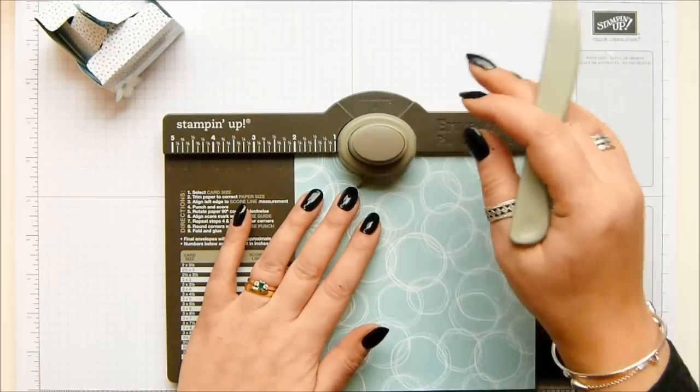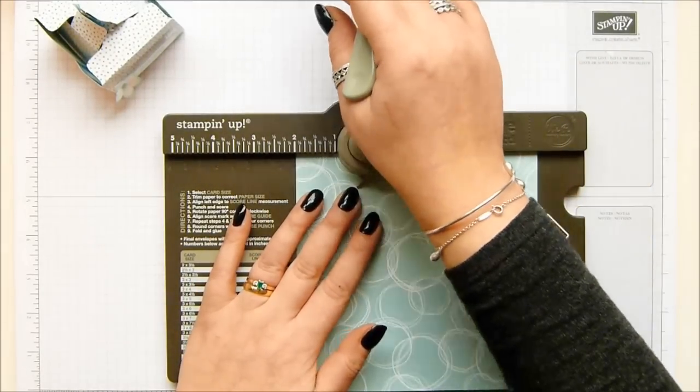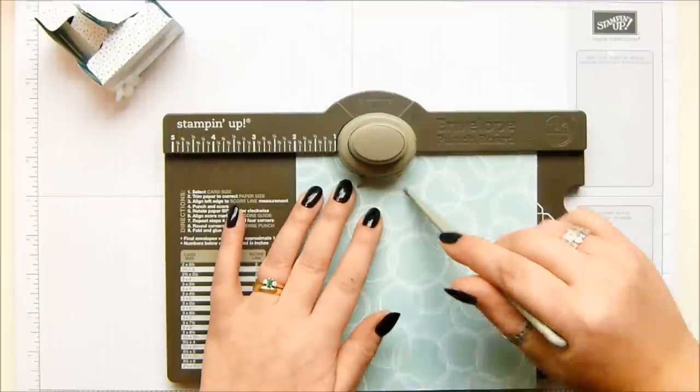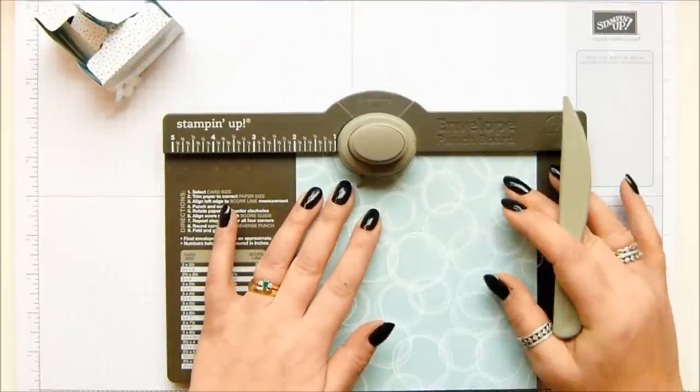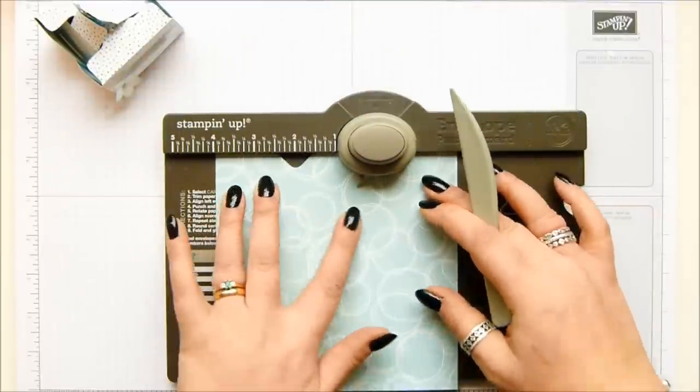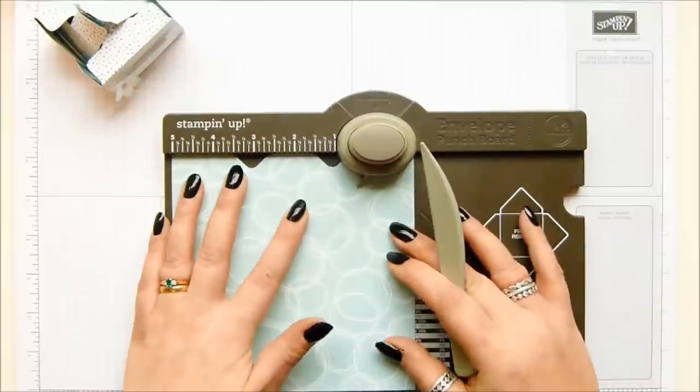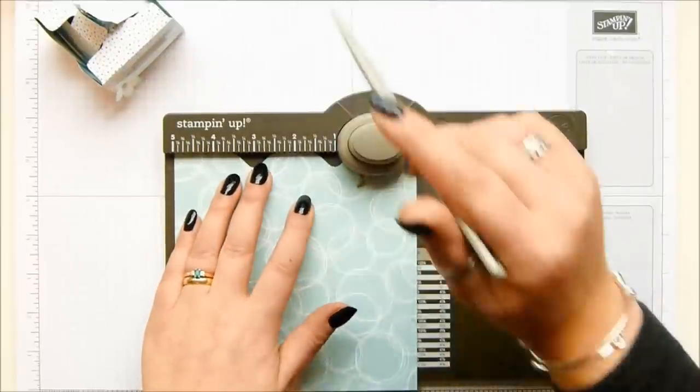So you score it, you punch and score it to 2 inches, 5 centimeters, punch and score, slide it up to 4, punch and score and then move it up to 5, punch and score.